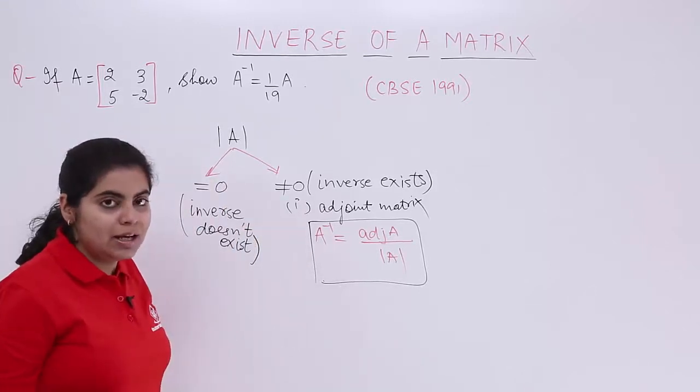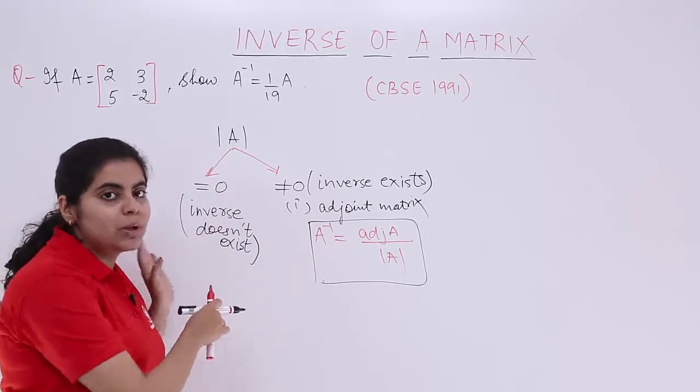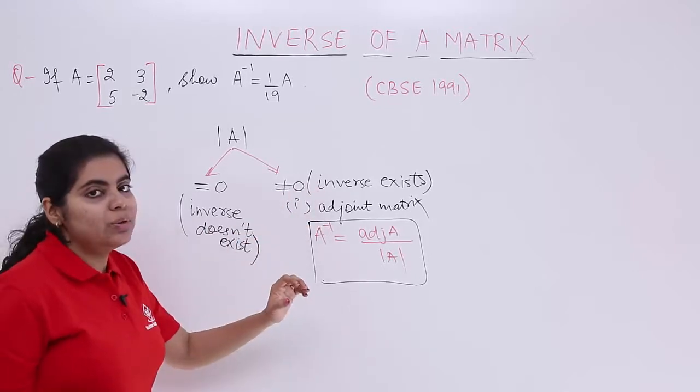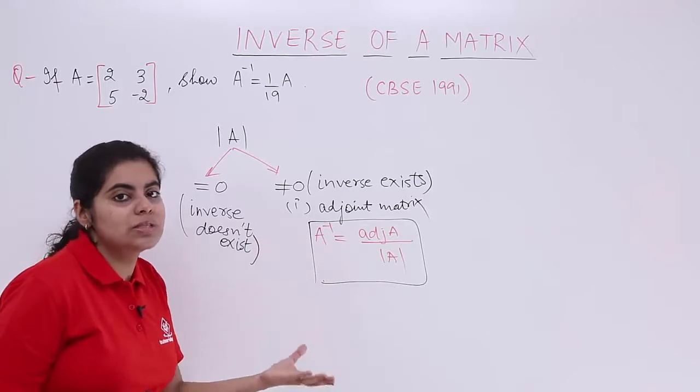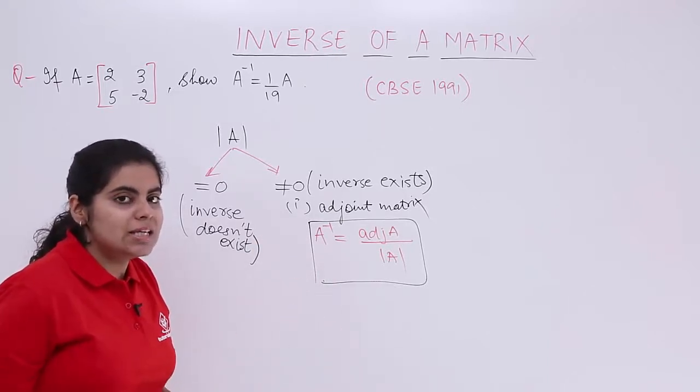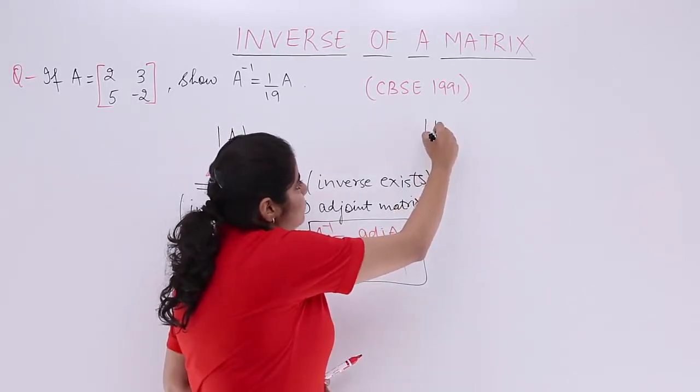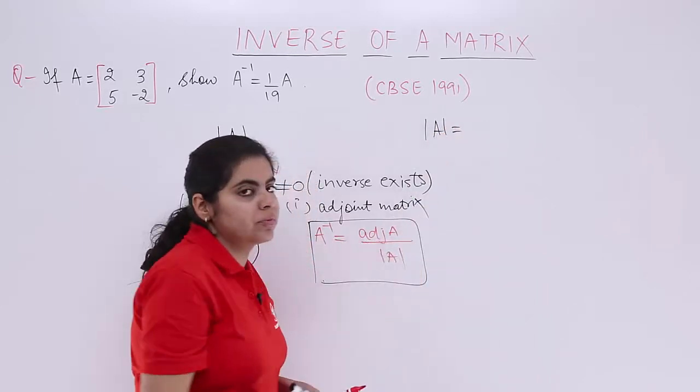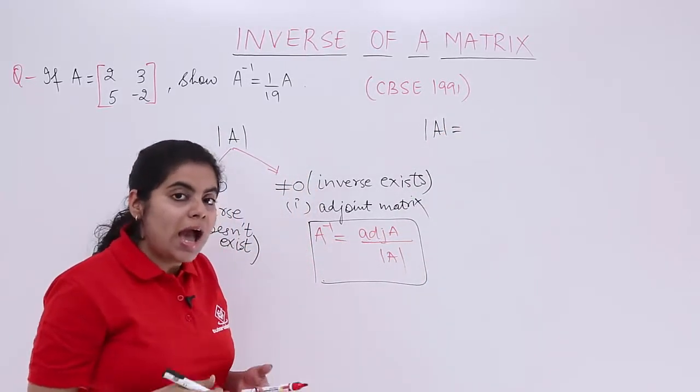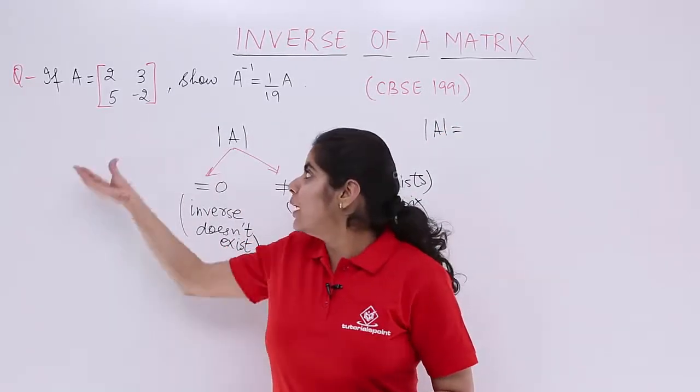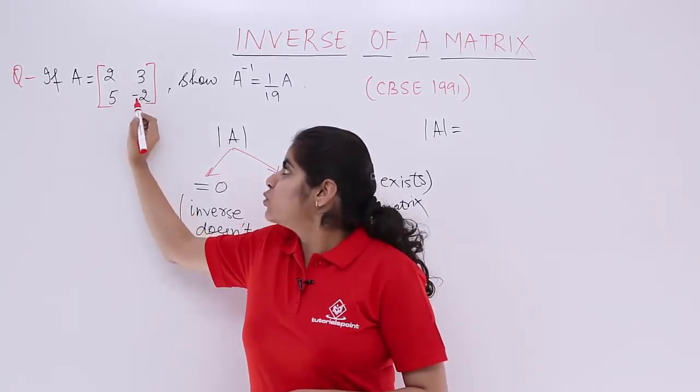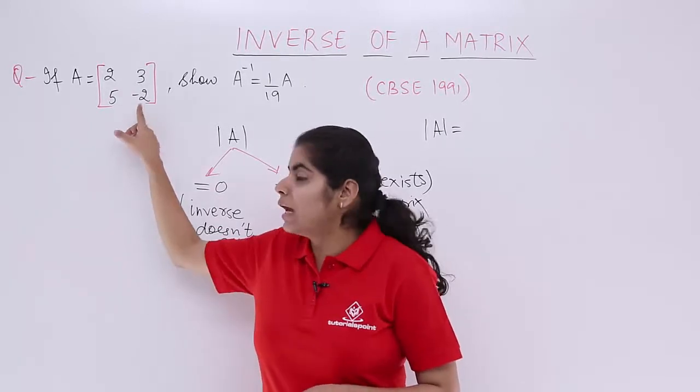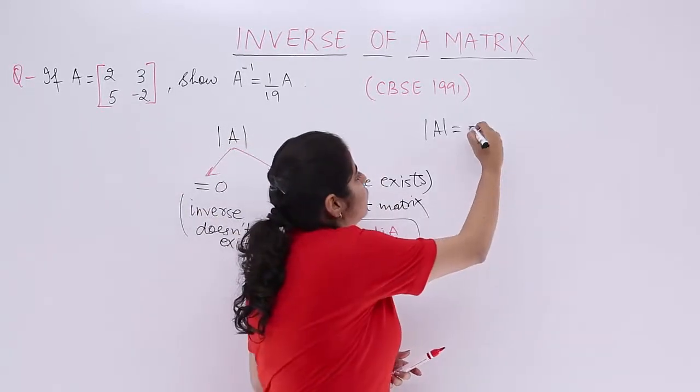We are going to check the determinant value. If it is 0, we will stop the question there and then. If it is not equal to 0, yes, we will find out the inverse. So let us see the determinant value. Now det A means the determinant of A. For a 2 by 2 matrix, cross multiply and find the determinant. When you cross multiply, 2 into 2 is 4 and minus sign is there, so it is minus 4.